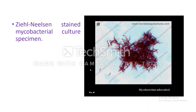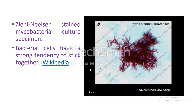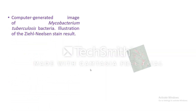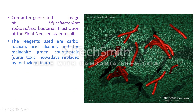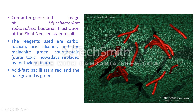This Ziehl-Neelsen stained Mycobacterium culture specimen shows that bacterial cells have a strong tendency to stick together. This computer-generated image illustrates the Ziehl-Neelsen stain beautifully, showing delicately beaded Mycobacteria taking the red stain. The reagents used are carbol-fuchsin and acid-alcohol, and the counterstain is toxin, now replaced by methylene blue. Acid-fast bacilli stain red, and the background can be green or methylene blue.